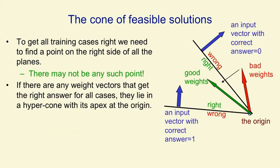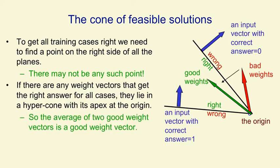One thing to notice is that if you get a good weight vector, that is something that works for all the training cases, it'll lie in the cone. And if you get another one, it'll lie in the cone. And so if you take the average of those two weight vectors, that will also lie in the cone. That means the problem's convex. The average of two solutions is itself a solution. And in general, machine learning, if you can get a convex learning problem, that makes life easy.